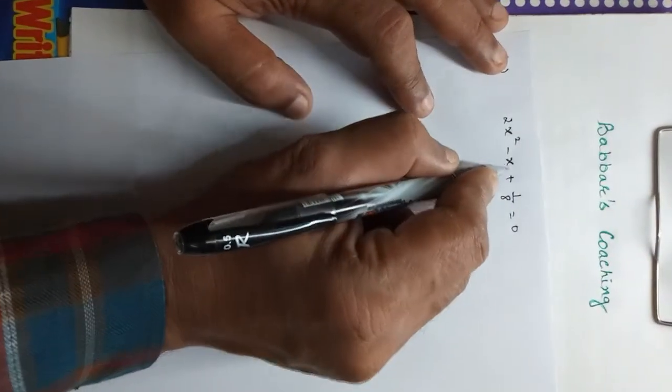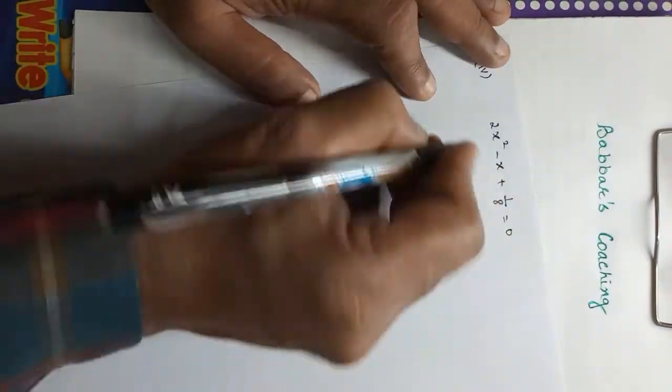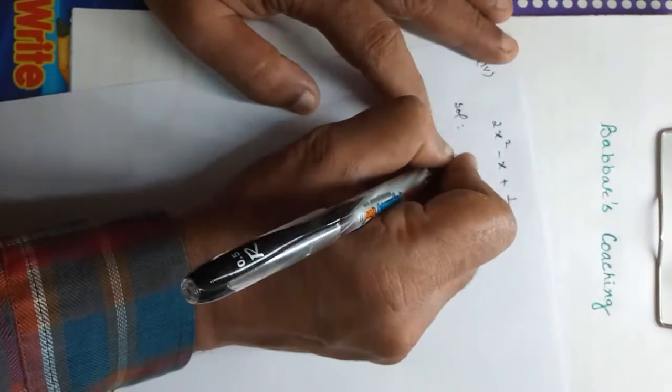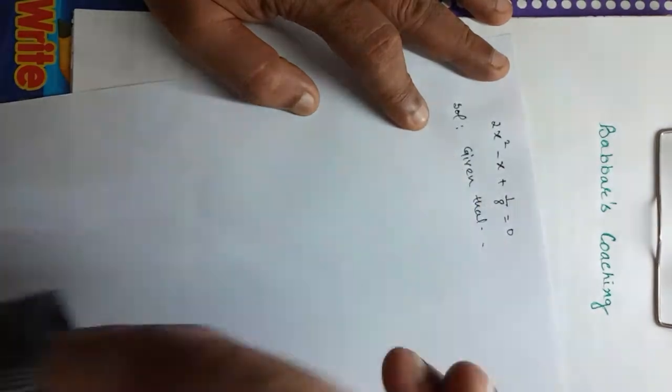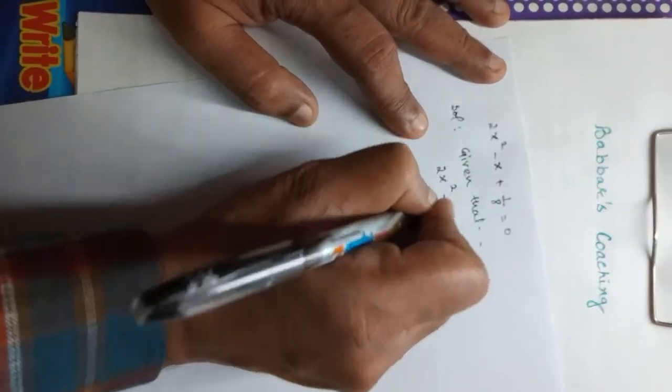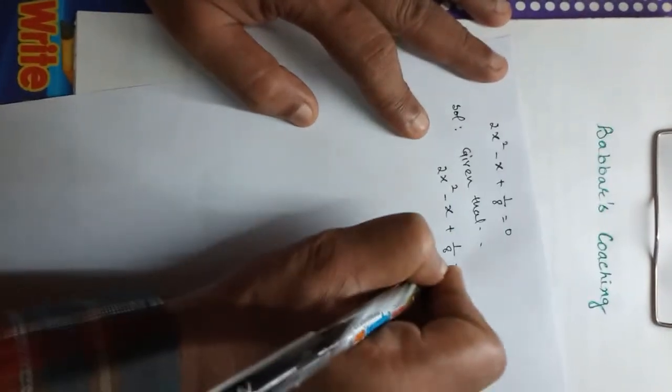The equation is 2x squared minus x plus 1 upon 8 is equal to 0. Let's do this. We will write the solution. Given that.